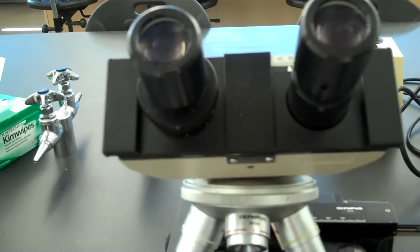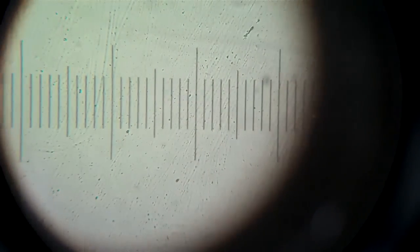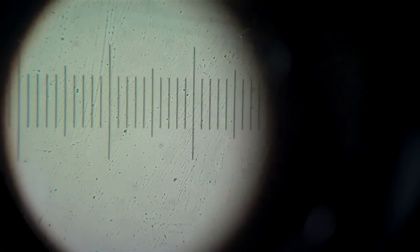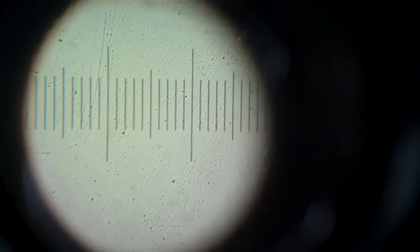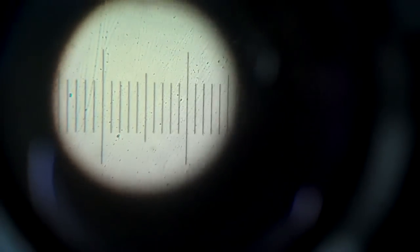Next you switch to the 40x objective lens, center and focus. Now it's time to take your measurement. It'll look something like this. Between each one of those lines is 0.01 millimeters. Between a tall line and a short line is 0.05 millimeters, and between two tall lines is 0.1 millimeters.